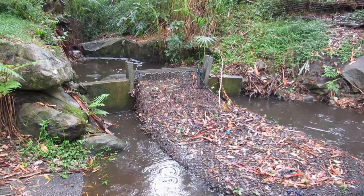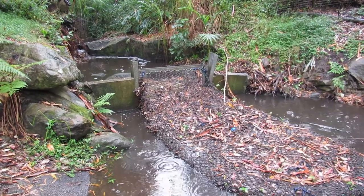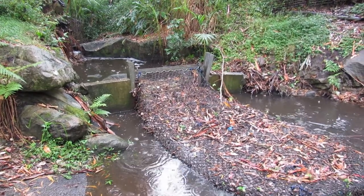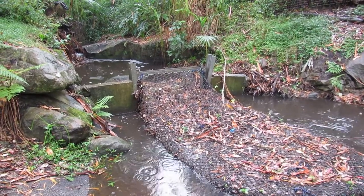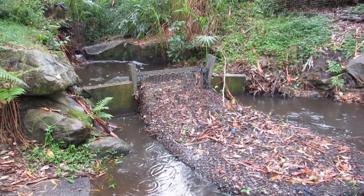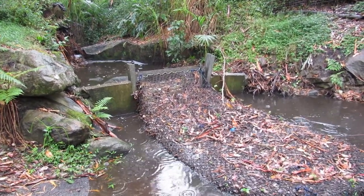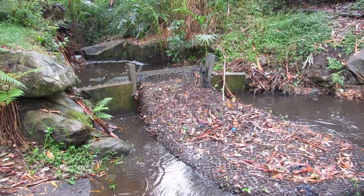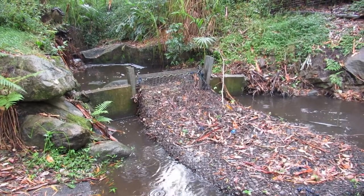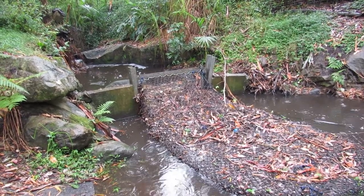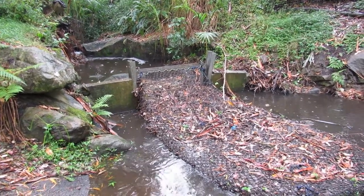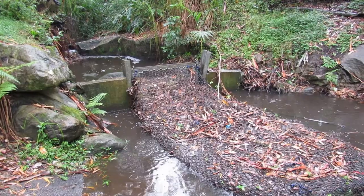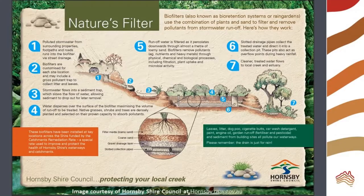In order to improve water quality, many local councils install a variety of stormwater treatment devices. The most basic treatment is a gross pollutant trap that catches large items. More advanced stormwater treatment uses natural principles to create a biofilter.